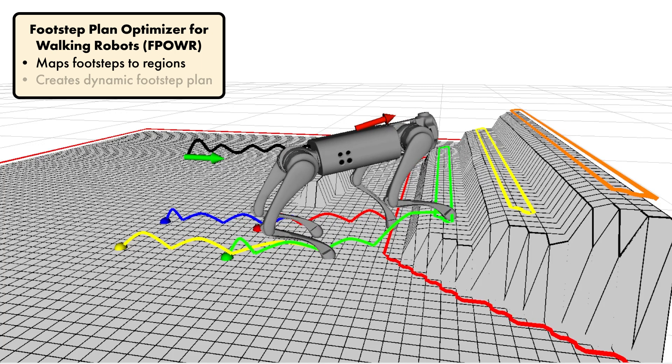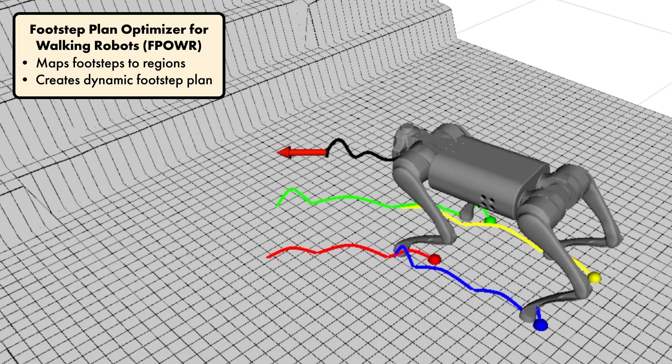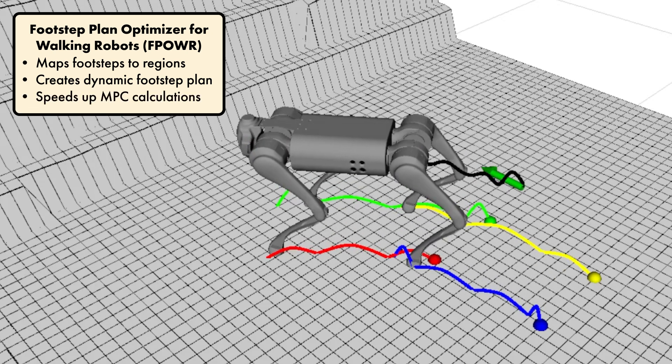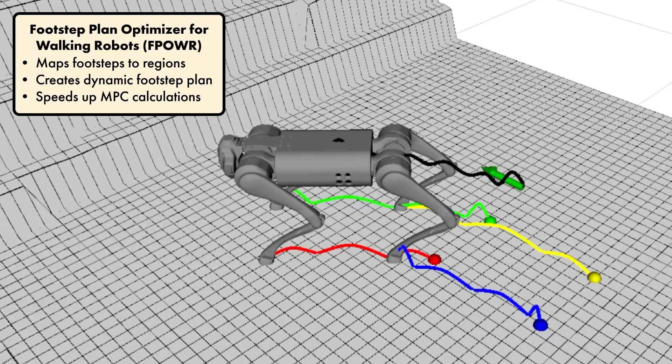With this approach, not only can we generate a dynamic footstep plan, but we can also use the simplified trajectory as initial guesses for the MPC calculations, speeding up computations and allowing for a faster control loop.